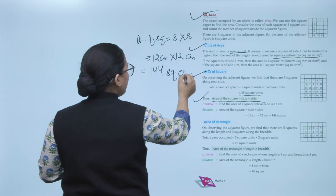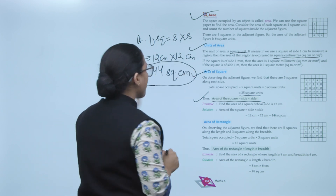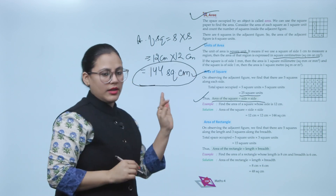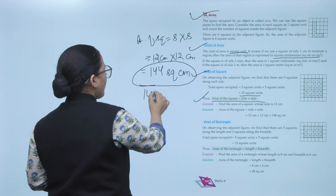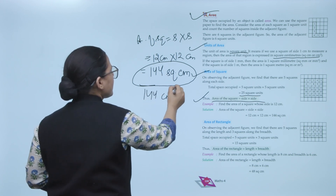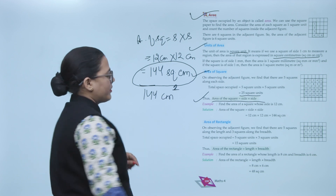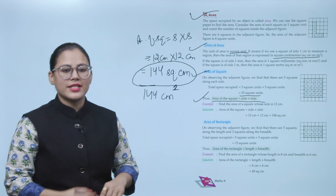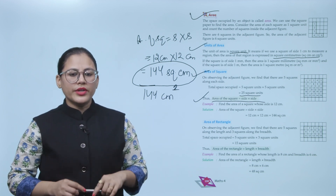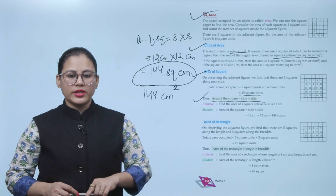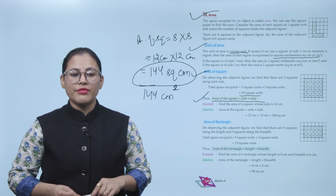Area of a square = side × side. Side is 12 cm, so area = 12 × 12 = 144 square centimeters, also written as 144 cm².